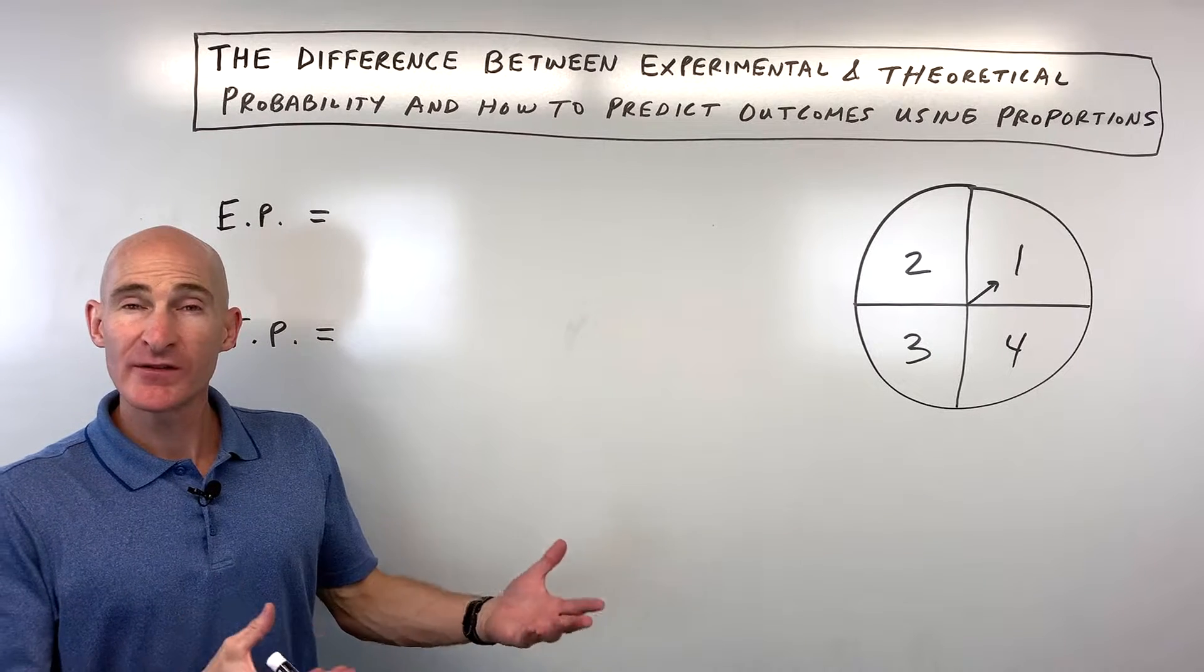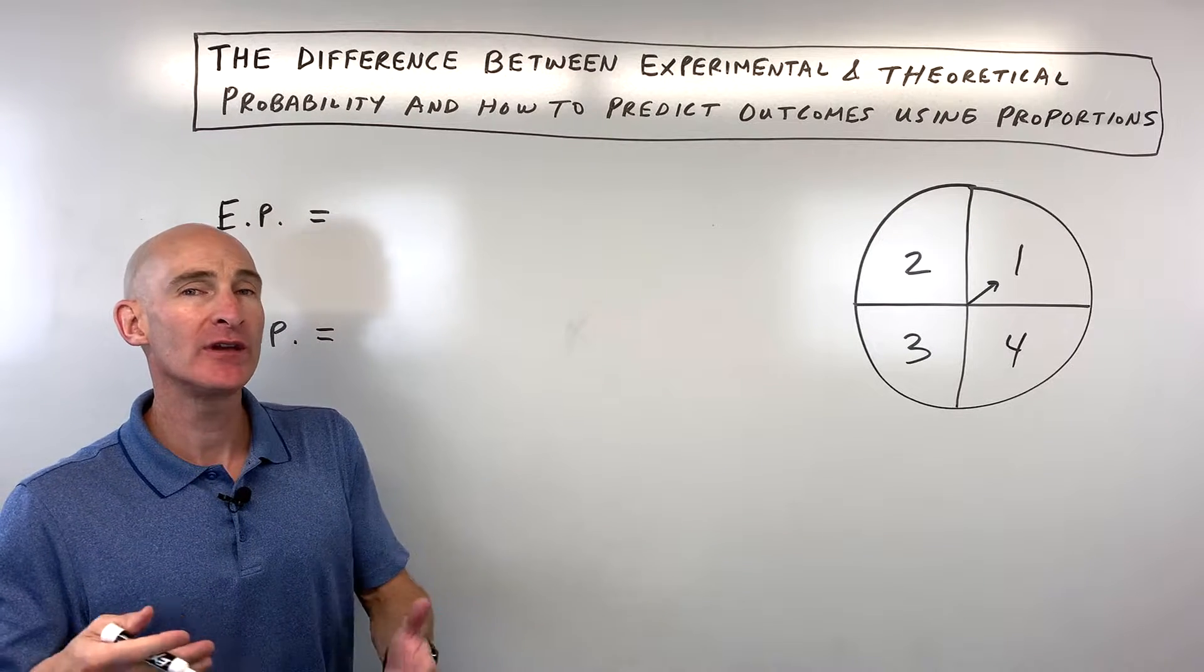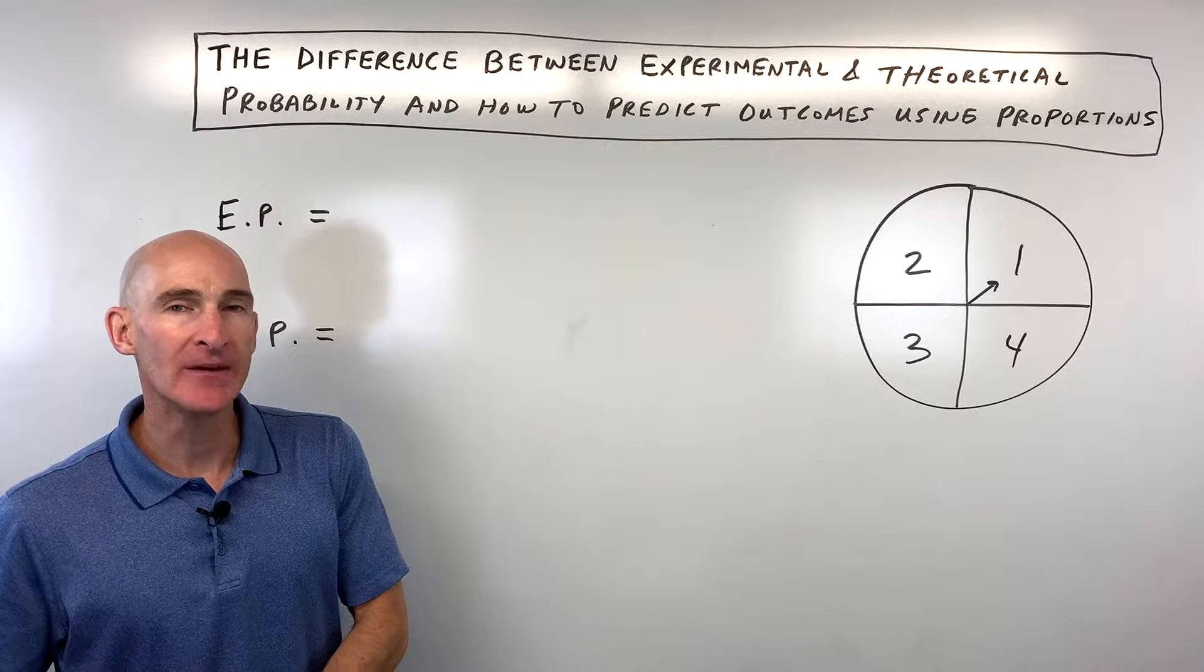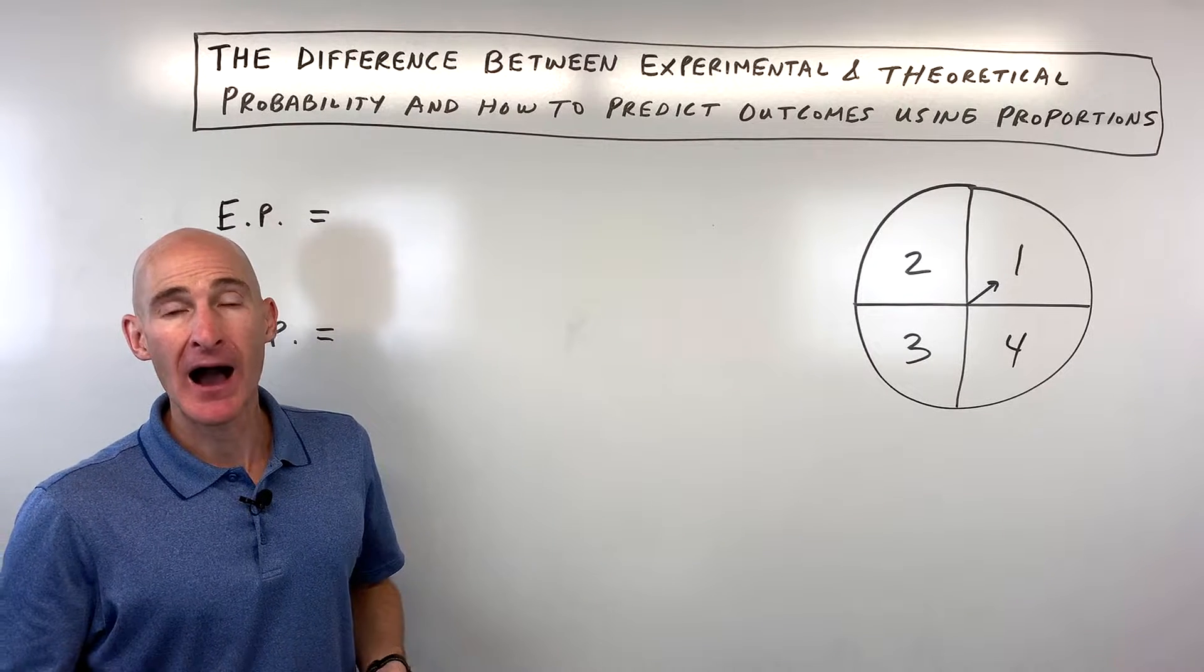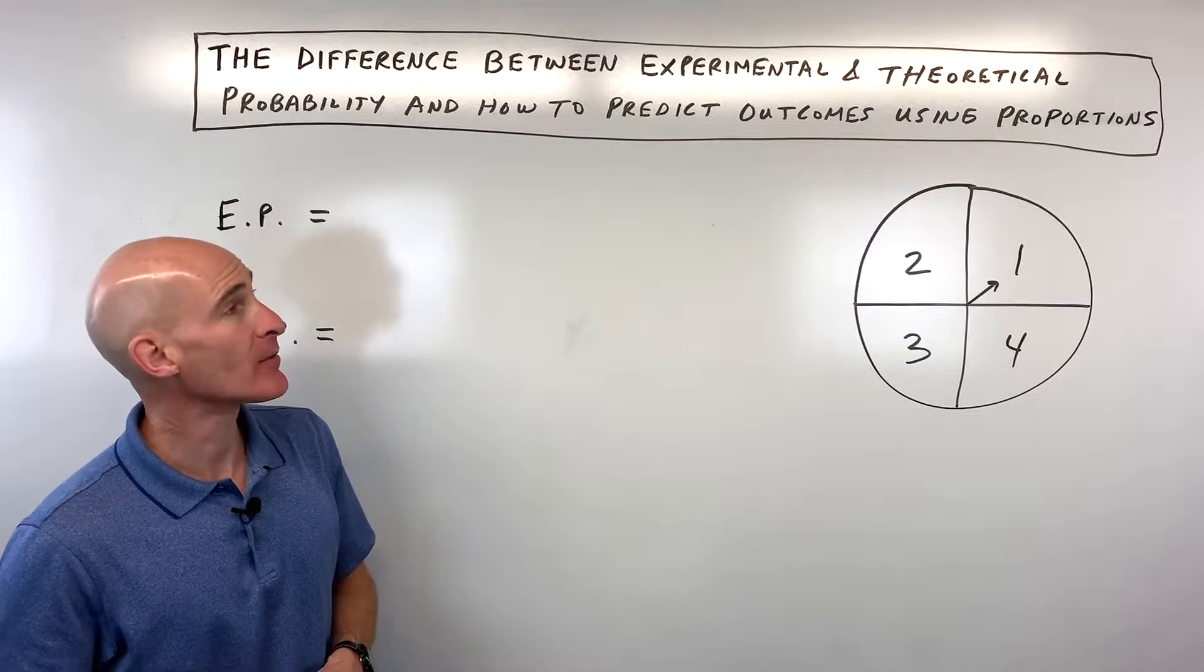In this video, we're going to talk about what's the difference between experimental probability and theoretical probability, and how do we use these probabilities to predict outcomes using proportions. So that's what we're going to talk about.